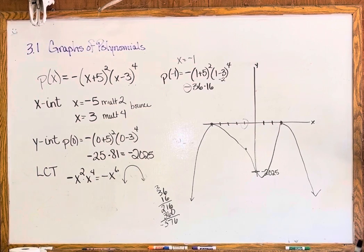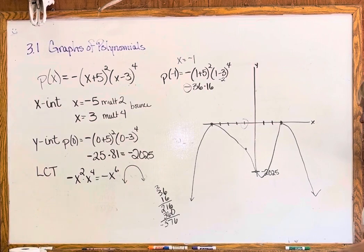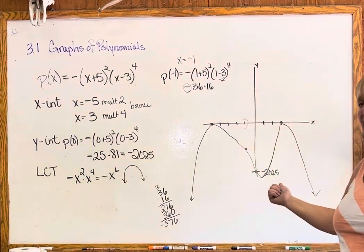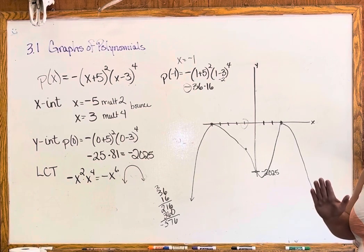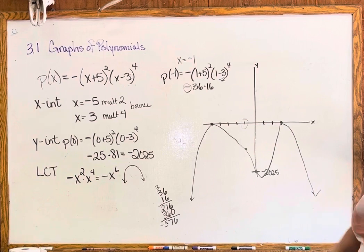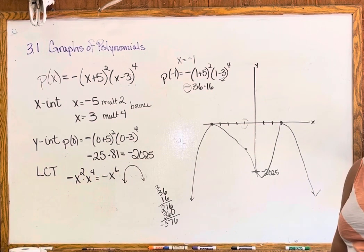That gives us an idea of what the graph looks like — not perfect but definitely informative. That wraps up section 3.1. The graphing requires a little more precision than a rough sketch, but it doesn't have to be fancy. The key things to know are the leading coefficient test and the multiplicity rule about bouncing or crossing. Have a great day, see you next time.